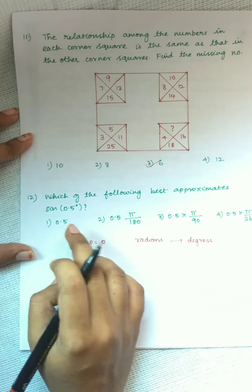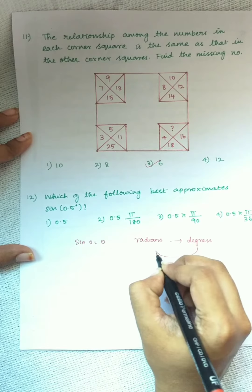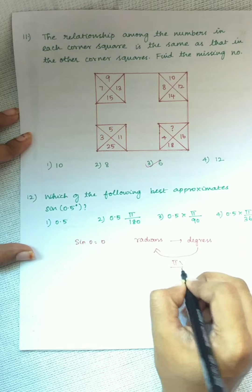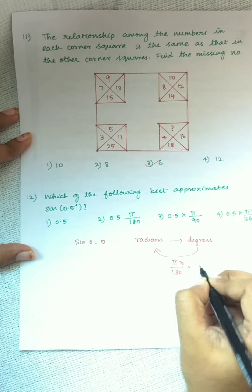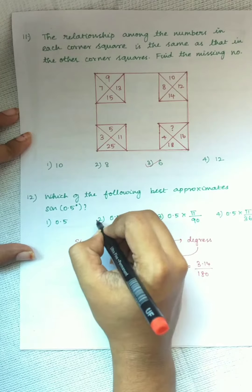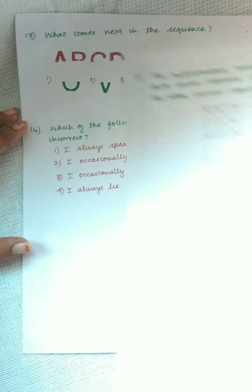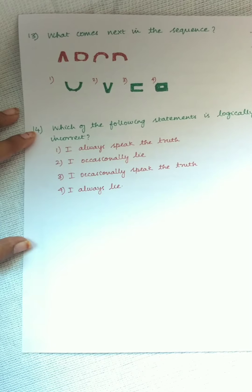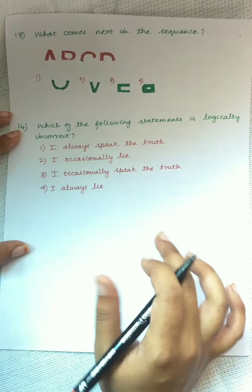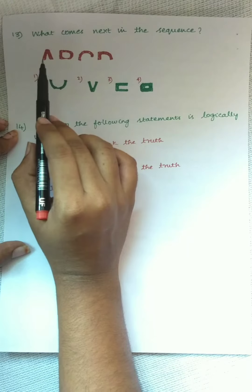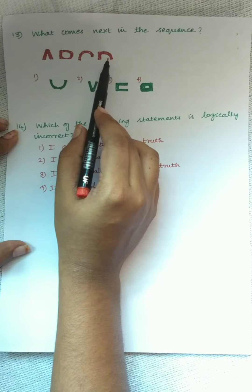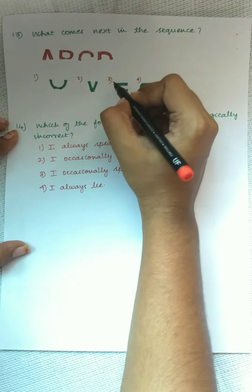Minimum number of moves required to transform figure 1 to figure 2. A move is defined as removing a coin and placing it such that it touches two other coins in a new position. This is very easy — this is one move, it is touching two coins. And this one is the second move. So the minimum number of moves is 2.